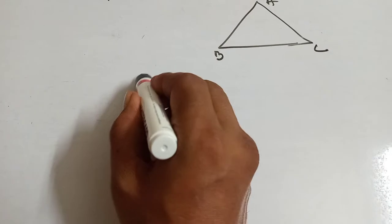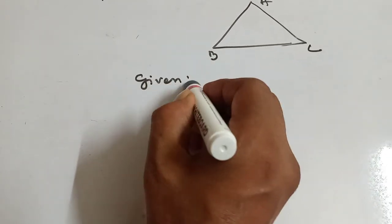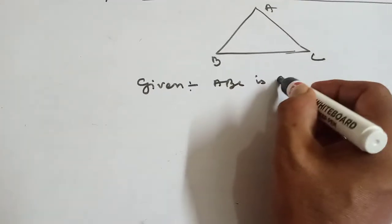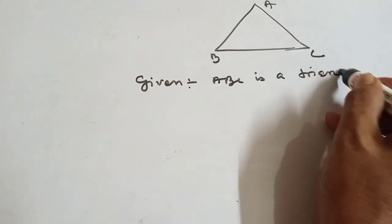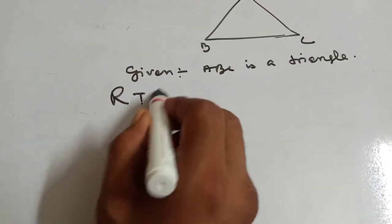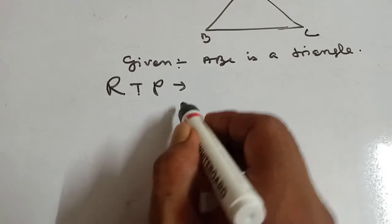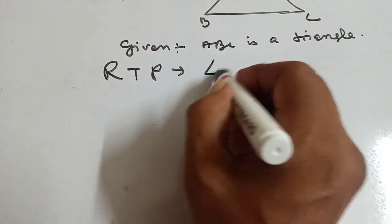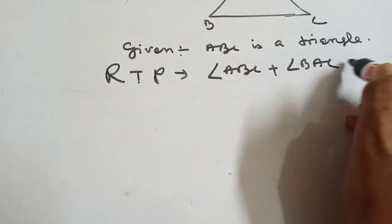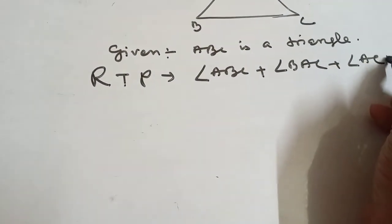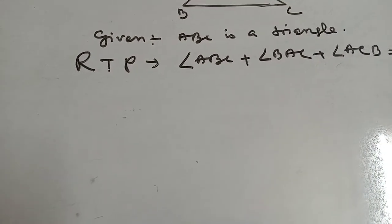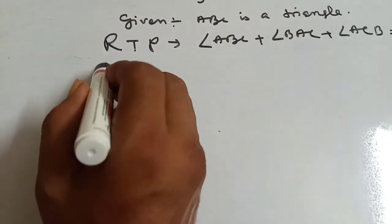Given: ABC is a triangle. Required to prove (RTP): the sum of 3 angles, that means angle ABC plus angle BAC plus angle ACB is equal to 180 degrees. Construction: the sum of 3 angles of a triangle is 180 degrees.